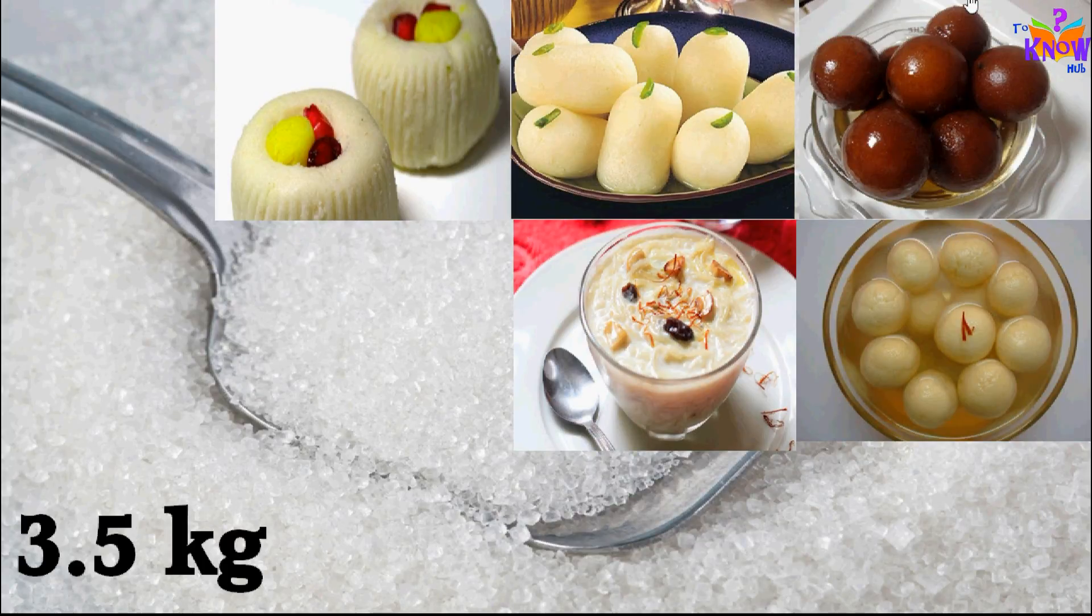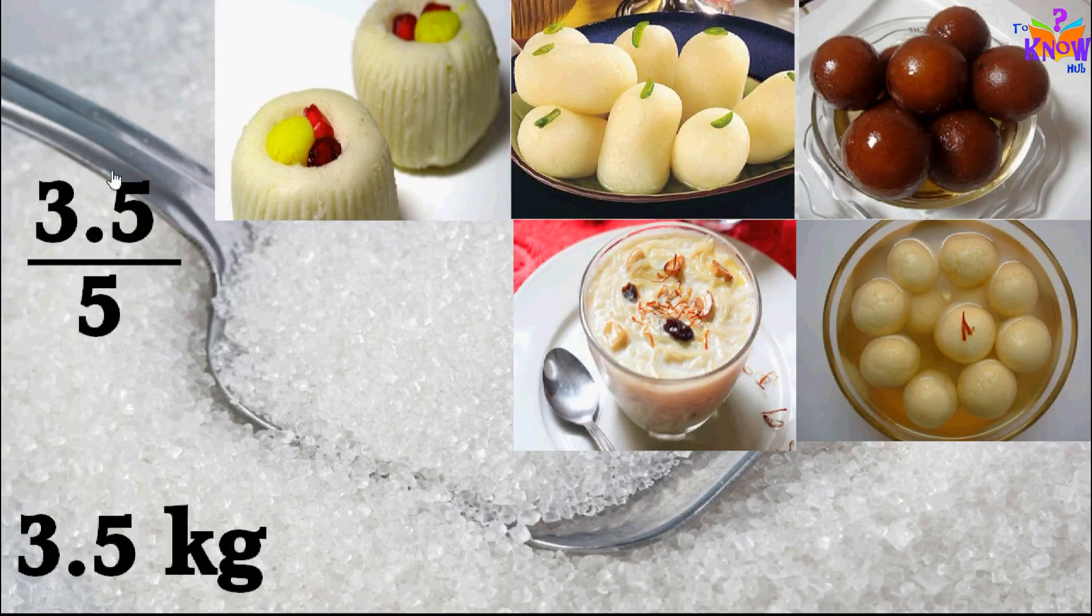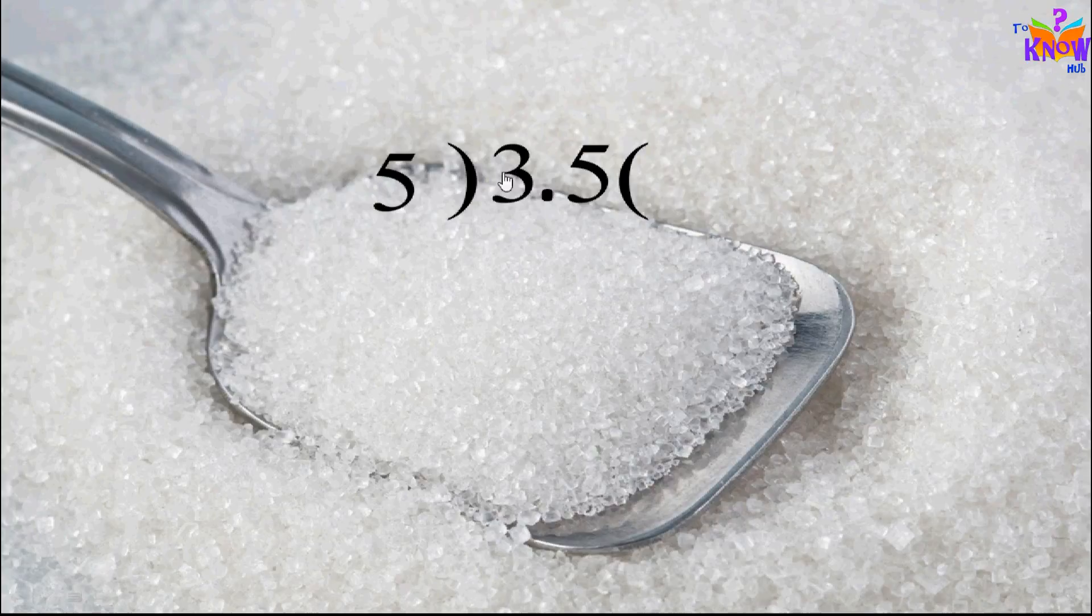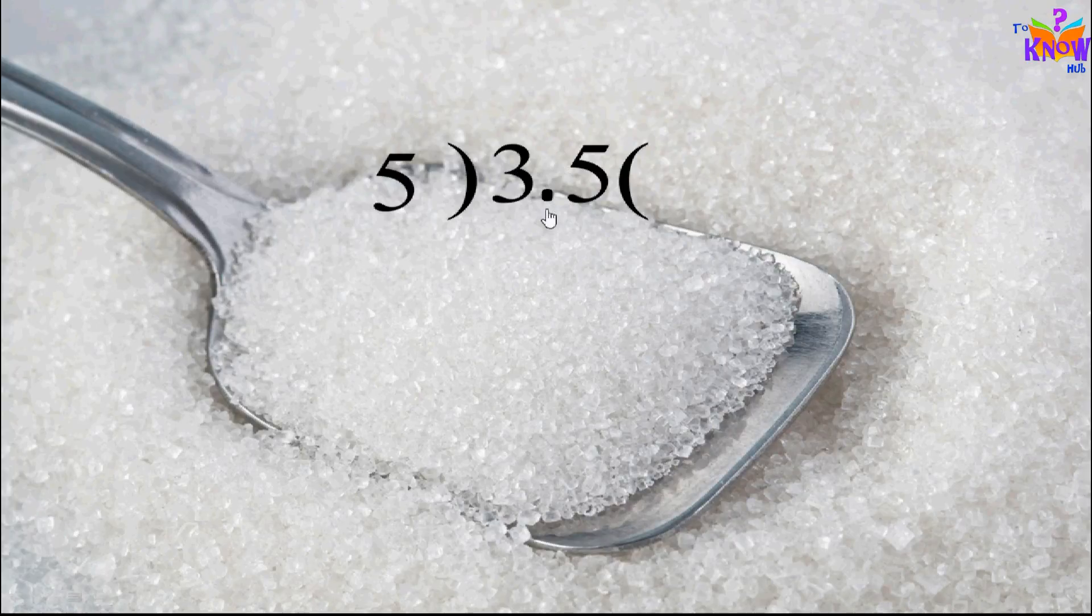3.5 divided by 5. Remember rule 1: first we need to lose decimal from the divisor. Here divisor is 5, so no worry. But 3 is smaller than 5, so we need to take the next digit, that is 5. Remember rule 2: whenever you go across the decimal you have to put decimal point in the result, that is in the quotient. Here we are taking the digit after decimal, so we need to put decimal in the quotient.